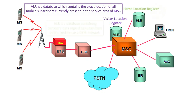Next is the HLR — Home Location Register. HLR is a database containing pertinent data regarding subscribers authorized to use a GSM network. If you purchase a SIM from a specific area, your entry is marked in the HLR database. This HLR is like your home — it contains all your information like ID proofs, which plan you are taking, which caller tune you are using, etc.